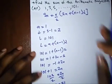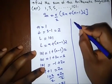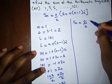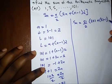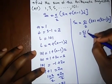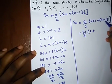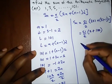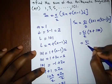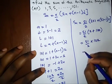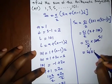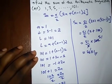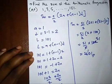Substituting n = 51 into the sum formula: Sn = 51/2 × (2×1 + (51-1)×2) = 51/2 × (2 + 100) = 51/2 × 102. This simplifies to 51 × 51 = 2601. Thank you for staying tuned to Destined to Win Tutorials. See you in our next video — please subscribe, like, and share!